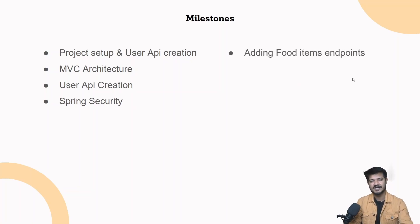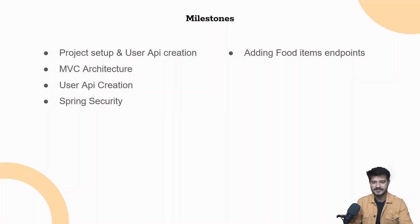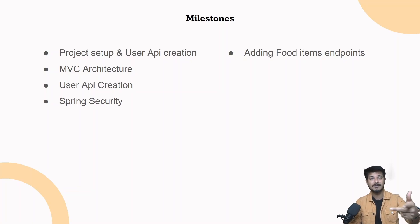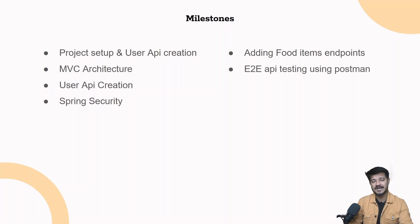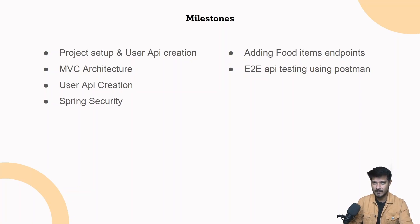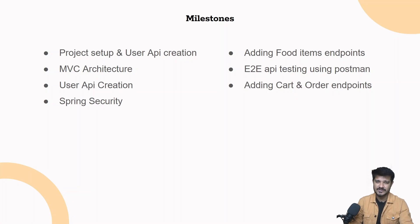Next, we'll add food item endpoints — get all food items to display on the home page, and as an admin you can add, delete, or update food items and their prices. Then we'll perform end-to-end testing using Postman — I'll explain how to write end-to-end tests in Postman so you can test the entire web app. Finally, we'll add cart and order endpoints so users can add items to the cart, click checkout, and place an order.